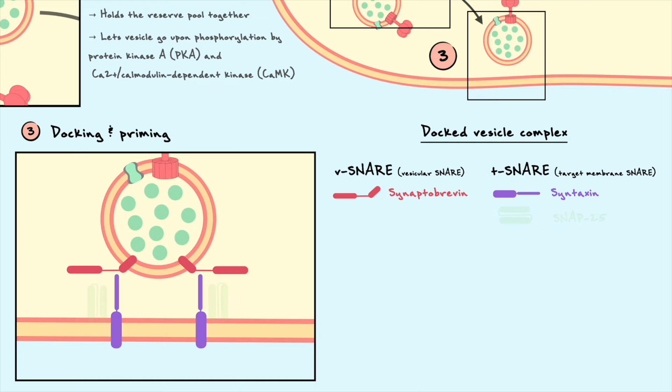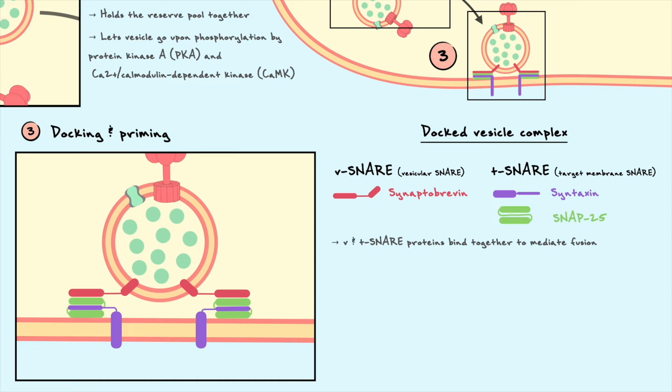At the docking stage, these snare proteins all collectively bind together to form a tight alpha-helical coiled-coil complex. Another important protein in the system named Munc18 binds to the complex and allows its formation. Normally, this complex on its own can fuse the vesicle to the membrane but a protein named complexin joins the complex and prevents that spontaneous fusion.